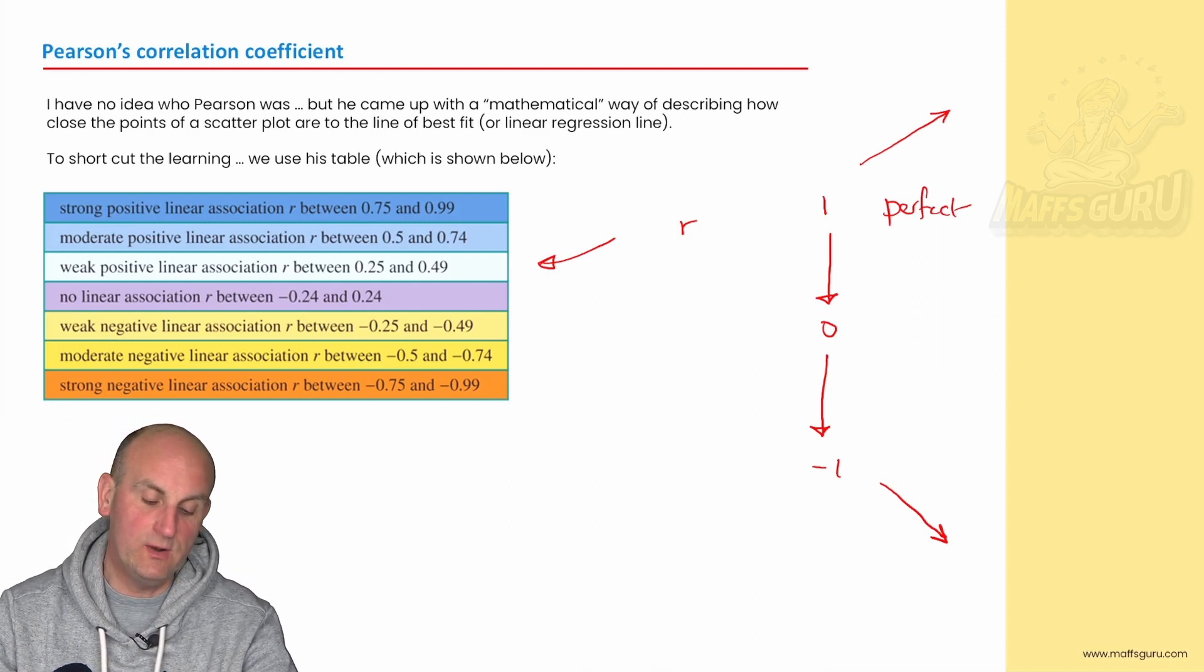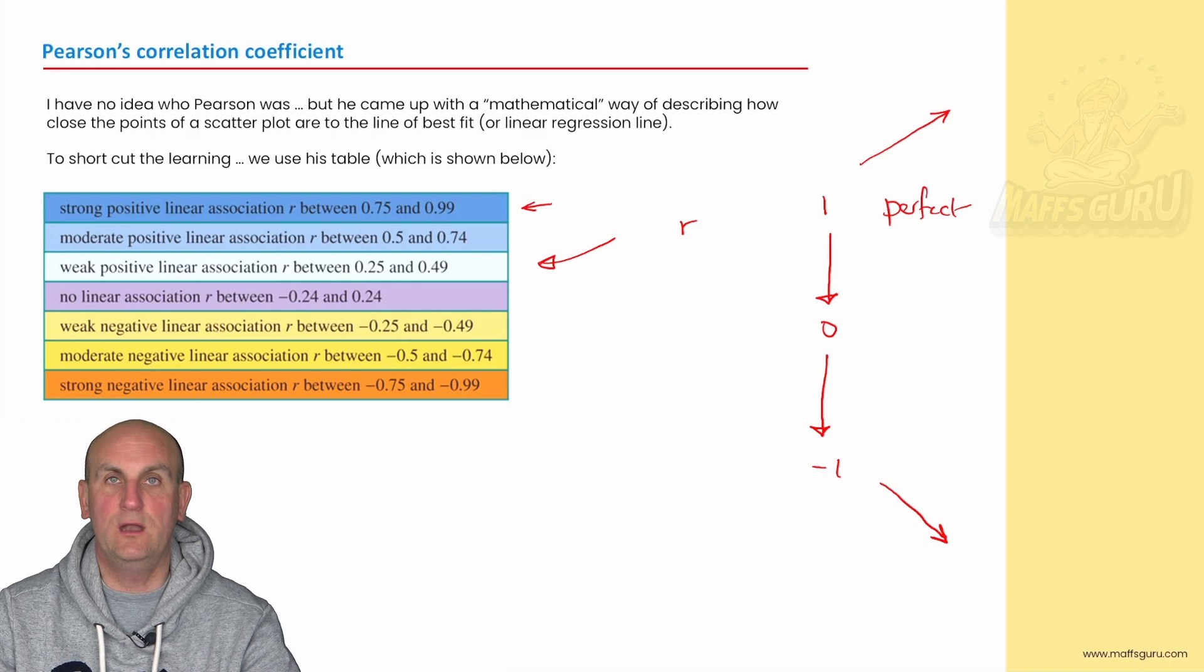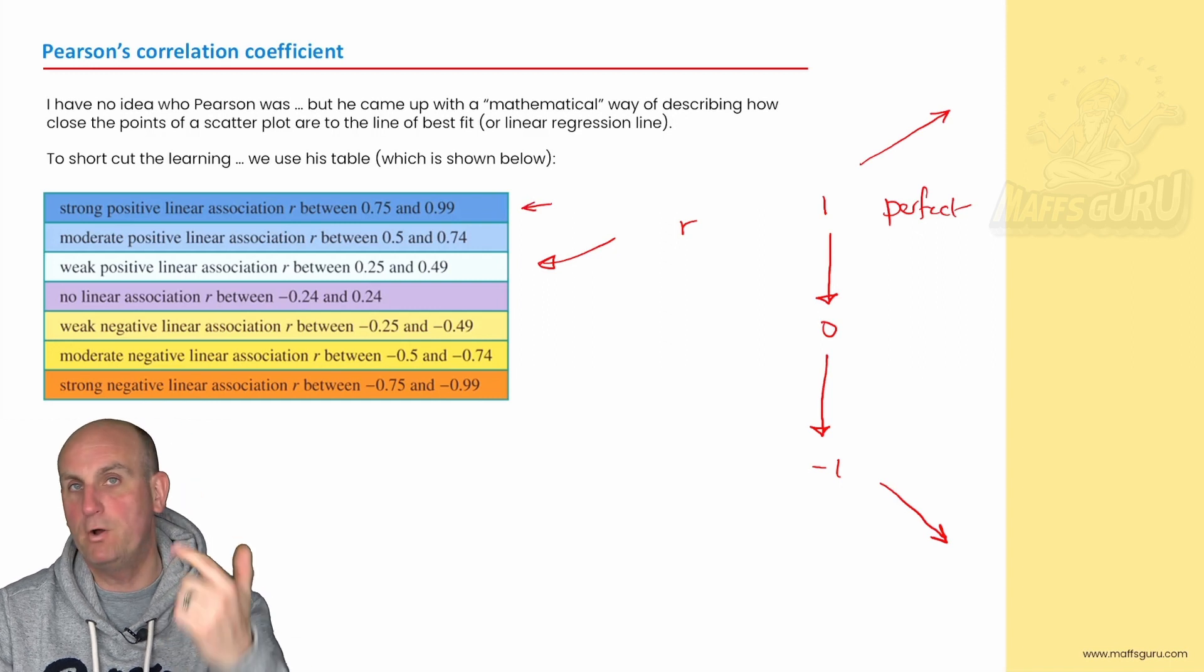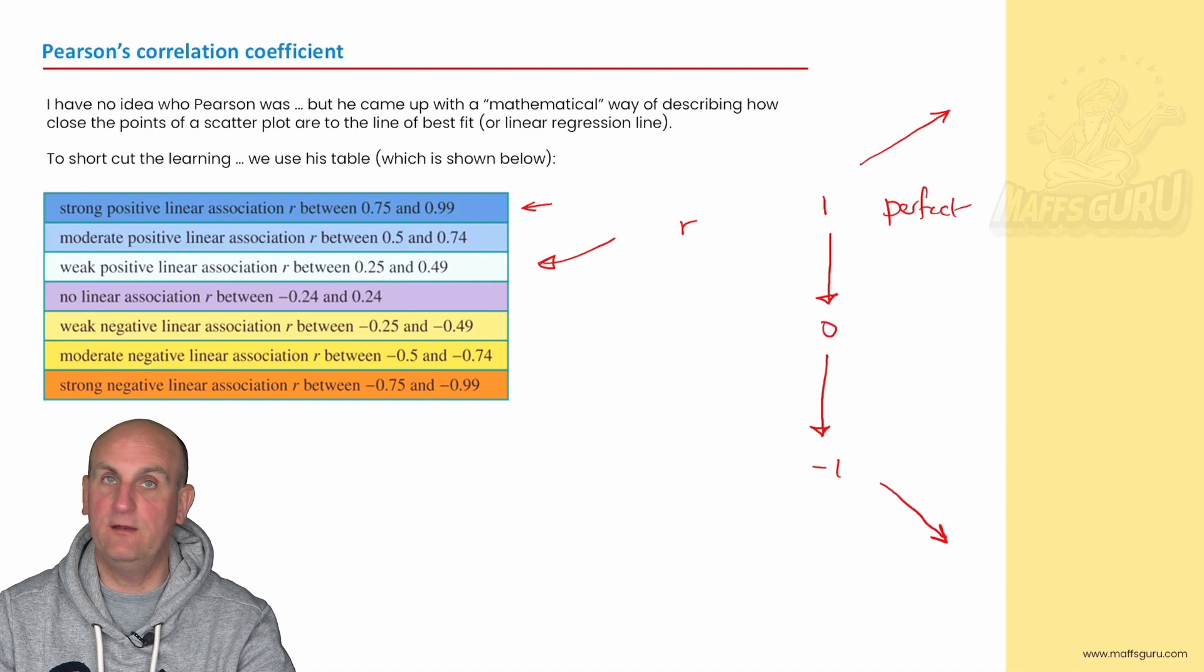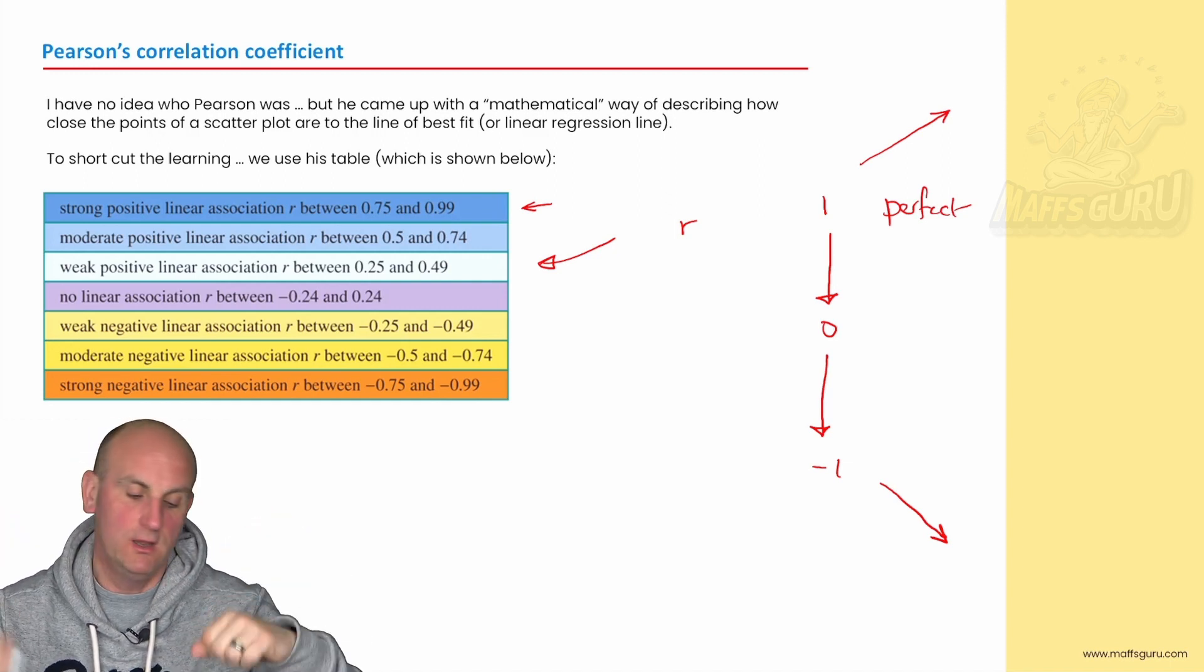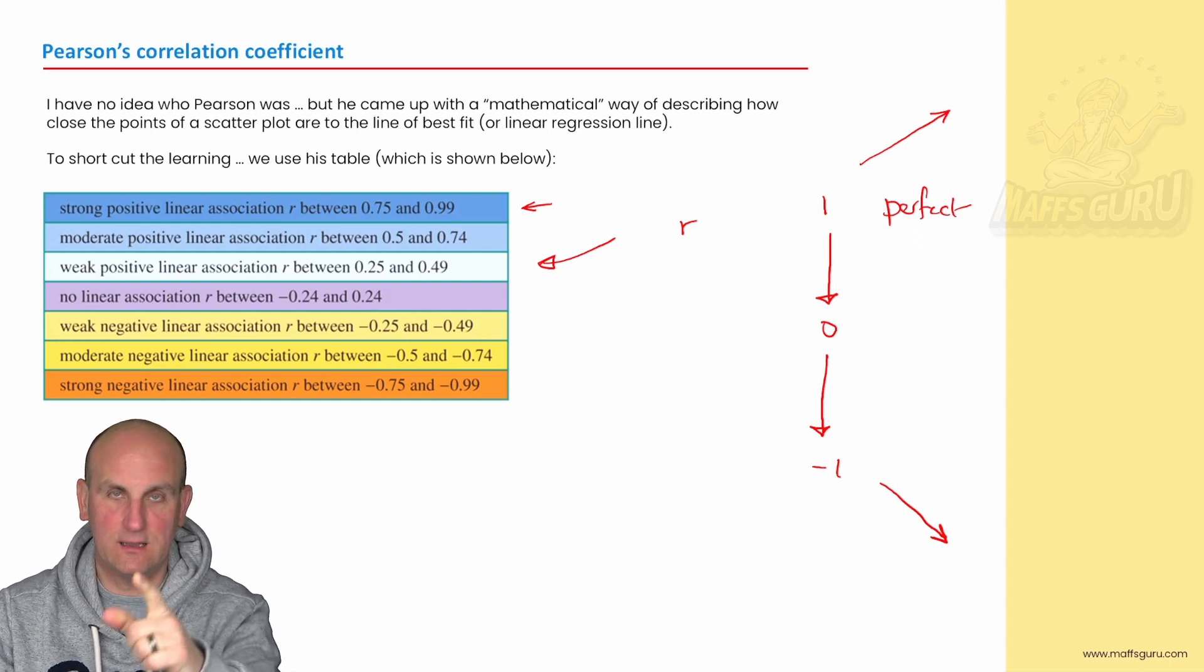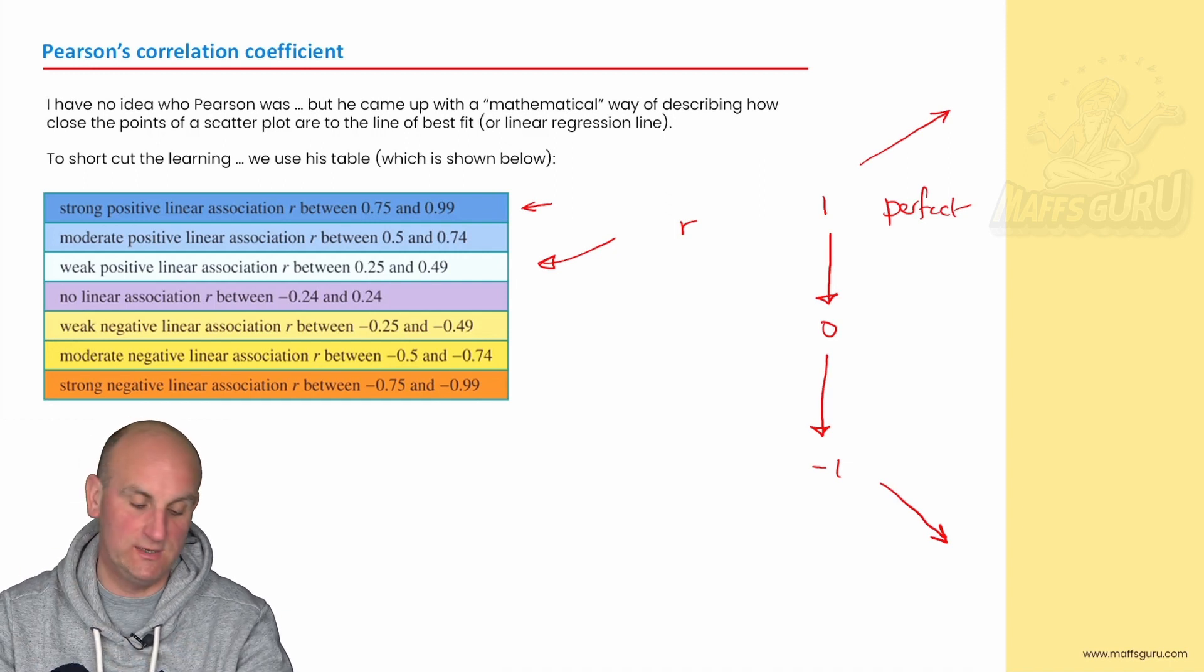He came up and said, if we get this R value that falls between, let's say, 0.75 and 0.99, we will describe that relationship as a strong, positive, linear association. There are four very important words there: strong, positive sloping up, linear, and association. There is some sort of pattern between these.